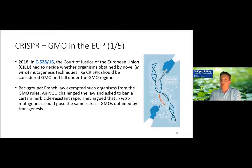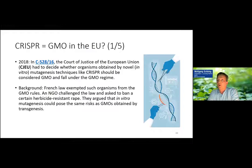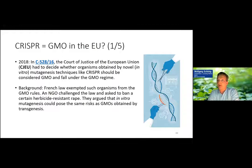Is CRISPR a GMO in the EU? It is. In 2018, the Court of Justice of the European Union had to decide whether organisms obtained by novel in vitro mutagenesis technologies like CRISPR should be considered GMOs and fall under the GMO regime. The background was that a French law exempted such organisms from the GMO rules. An NGO challenged that law and asked for a ban of a certain herbicide-resistant rape, arguing that in vitro mutagenesis could pose the same risks as GMOs obtained by transgenesis.